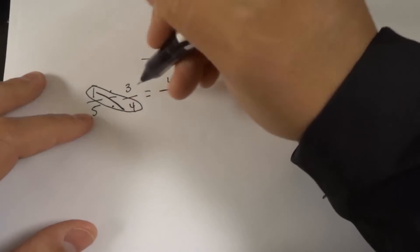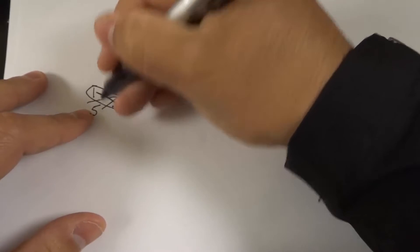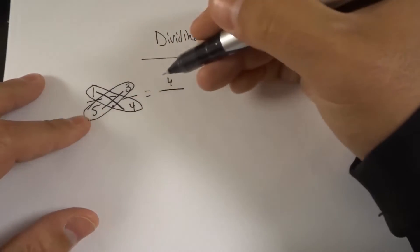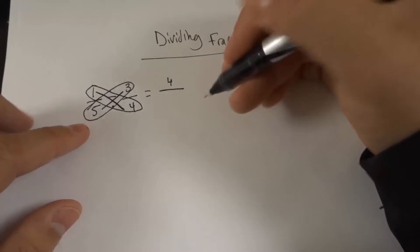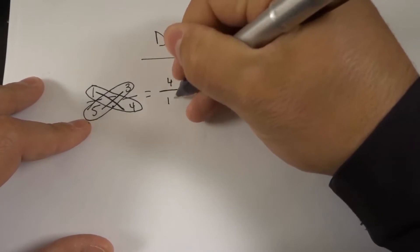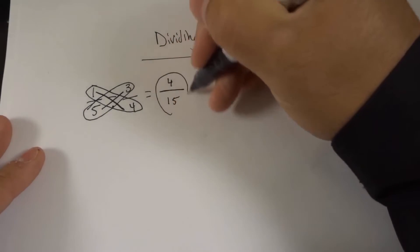Now if we also take the bottom left and we multiply it by the top right. Just put a line there and circle them like that. If I multiply those two numbers, that's going to give us the bottom number of our answer. 5 times 3 is 15. Just like that. Our final answer is 4 over 15.